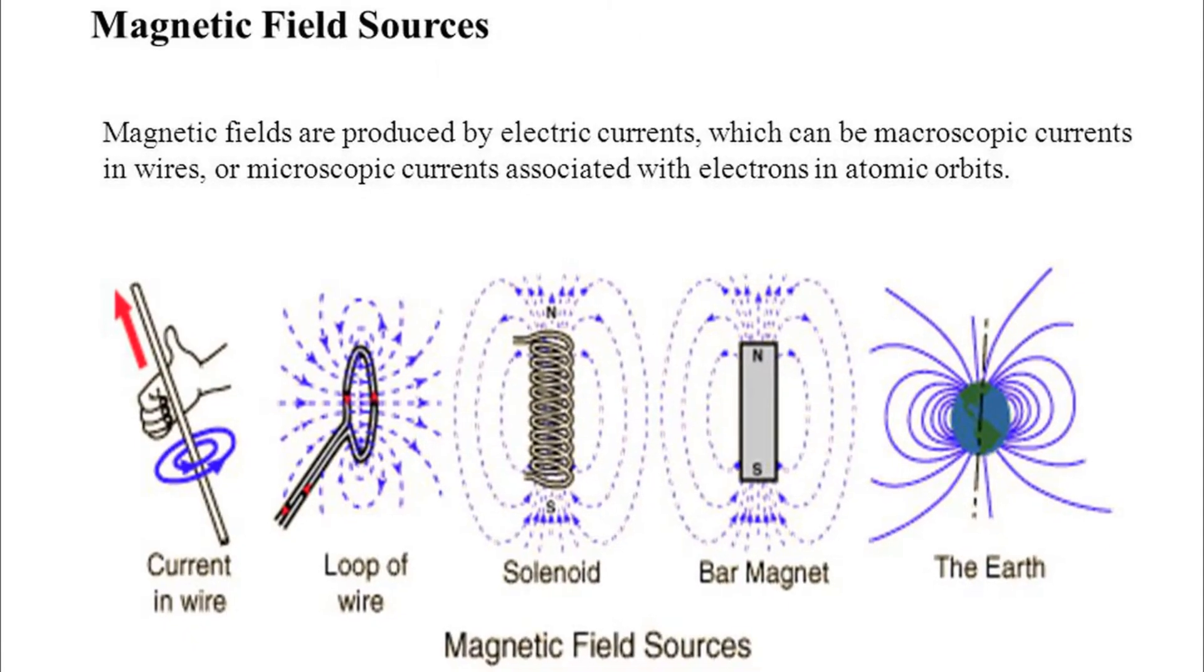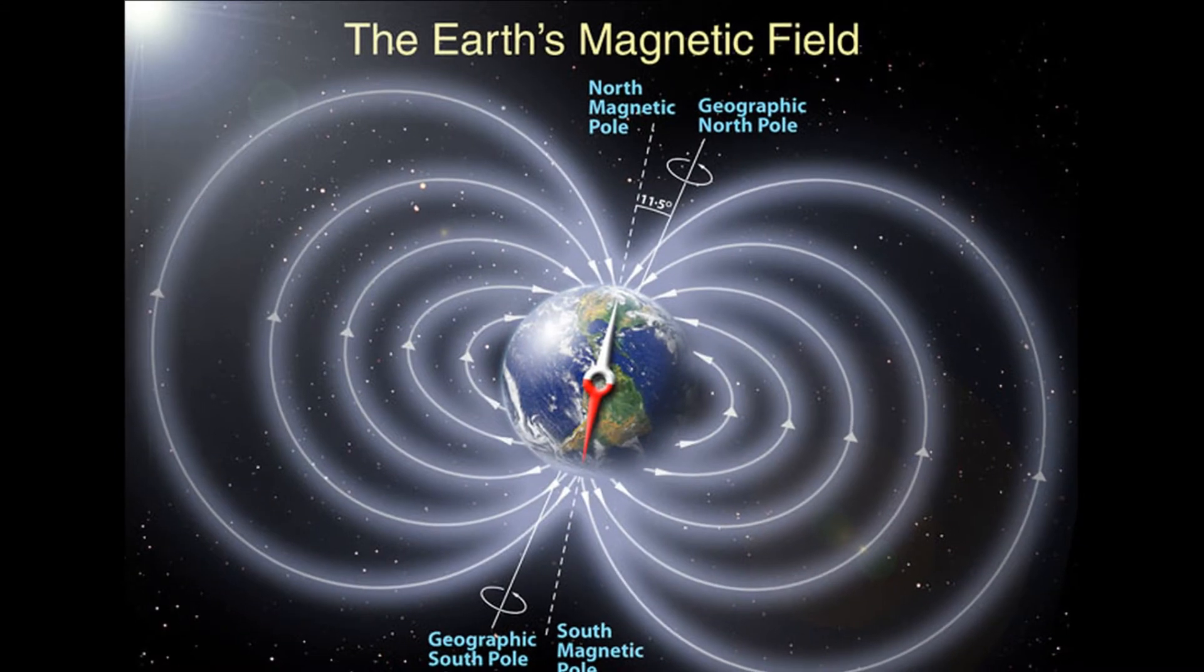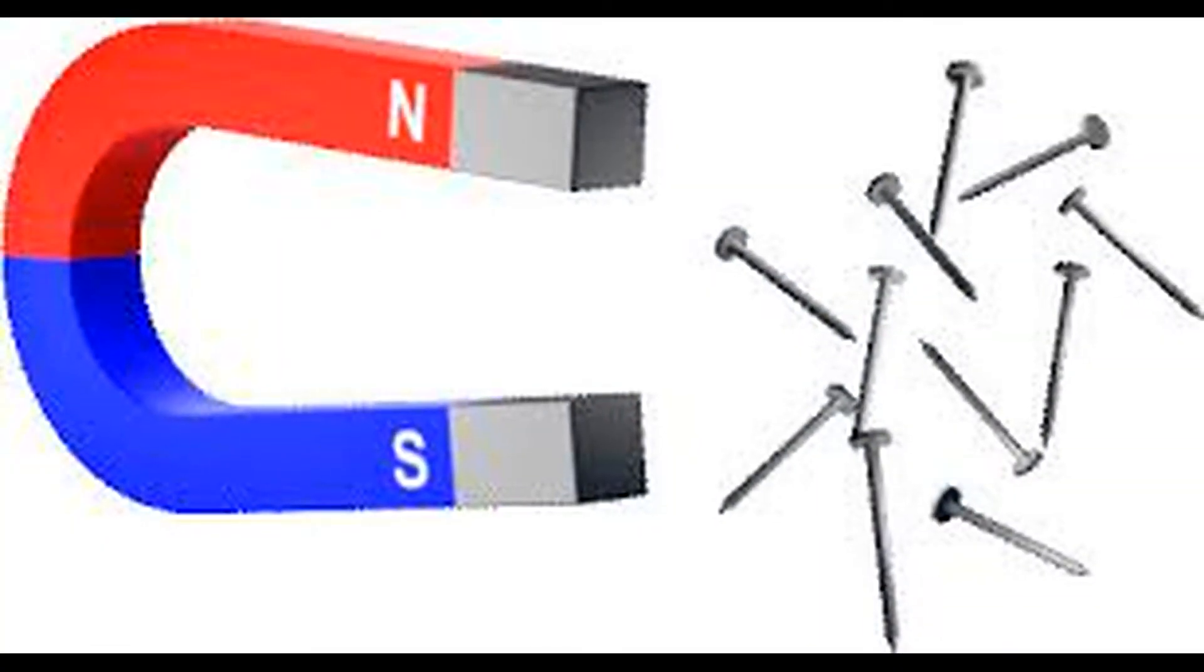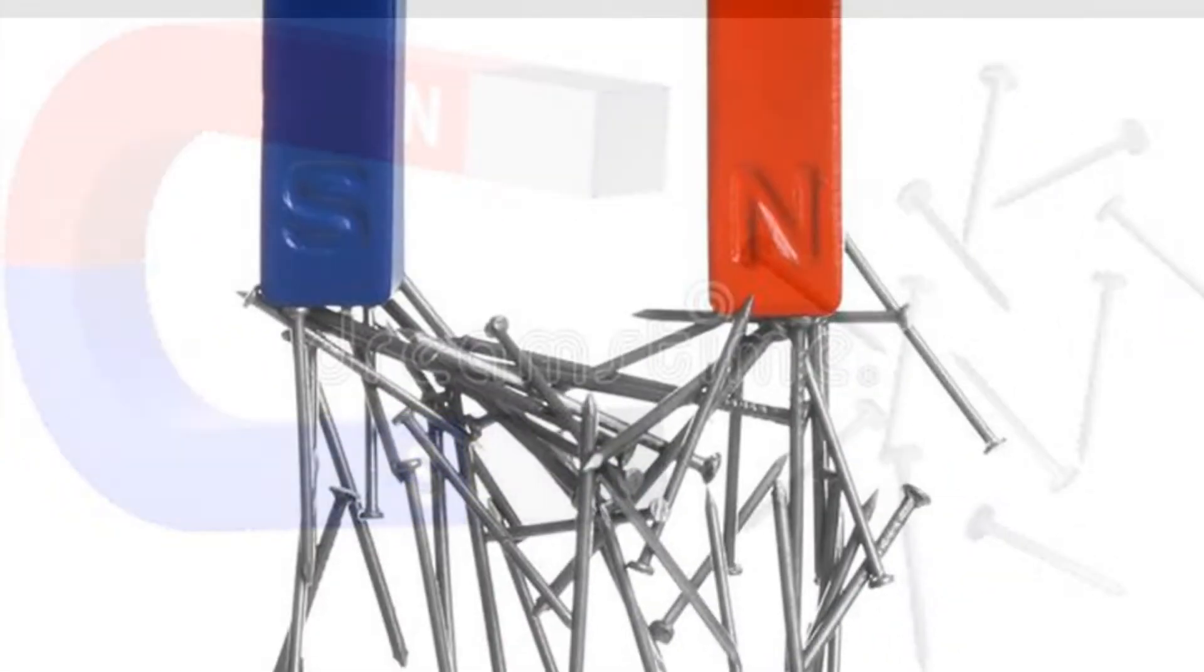Magnetic Field. The space around a magnet in which any other magnet or certain metals experience a force is called a magnetic field. Bring a steel pin near the pole of a bar magnet, it will stick to the magnet.